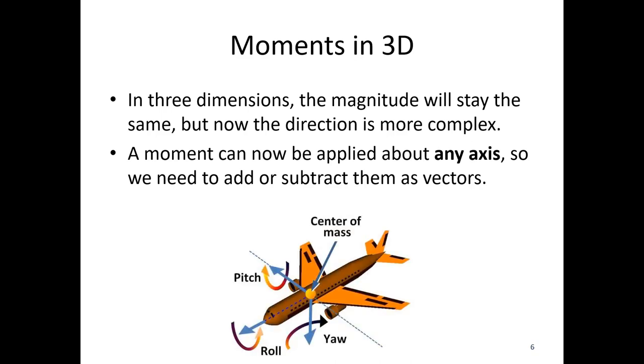Think about a plane. A plane can have roll, pitch, and yaw, and it can rotate about any of those axes. So if we've got moments acting on a plane in 3D, it can be more complicated because we can't simply add the magnitudes together. We're going to need to add those moments together as vectors. Magnitude and direction are going to be important.